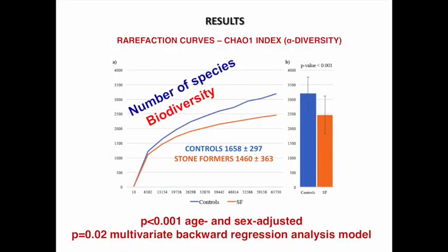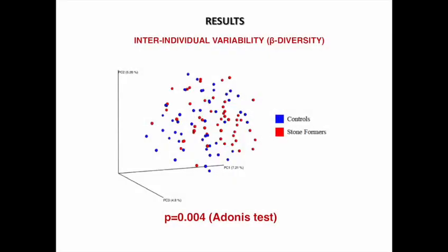16S analyses of fecal samples revealed that stone formers had a lower biodiversity than controls, and this result was confirmed at multivariate statistics accounting for all possible confounders. We also found that stone formers had a distinct overall fecal microbiota composition compared to controls, even if the principal coordinate analysis plot, which you can see in this slide, did not visually retrieve evident clusters.